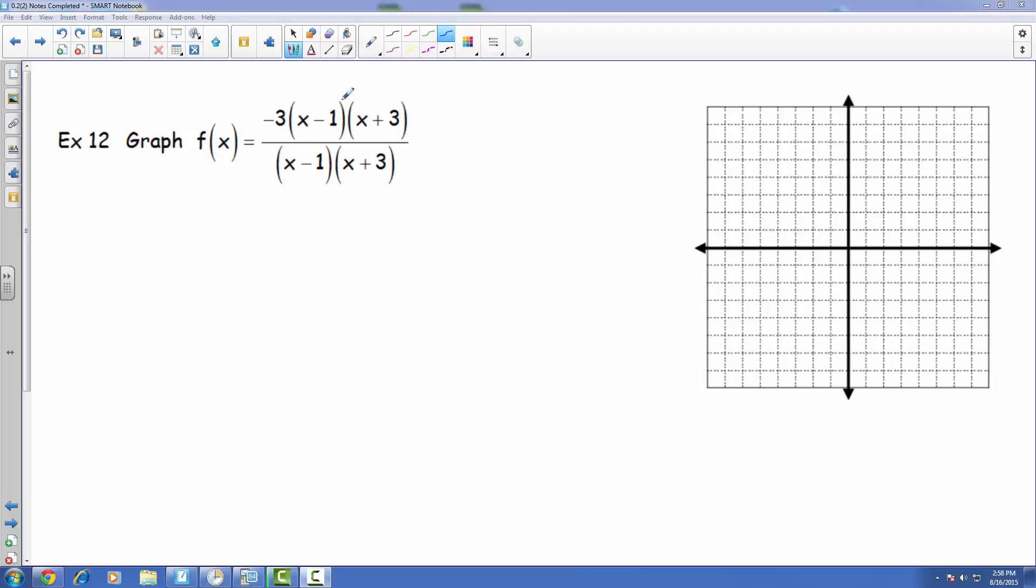We notice this x plus 1, there's one on top and also one on bottom. We can go ahead and cancel those out. This x plus 3 can simply cancel with this x plus 3 on the bottom. So our final function that we have, f of x, is actually just equal to negative 3.